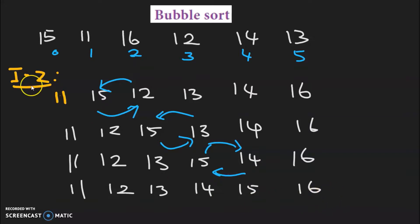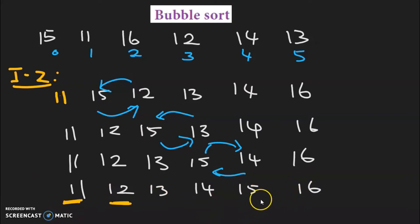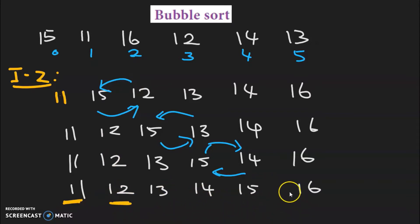We have come to the end of the list. We can see the 2nd element in the correct position. After this second iteration, positions are being added. Only at the end of the sixth iteration will we see the sorted array displayed.